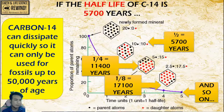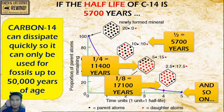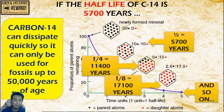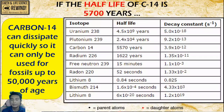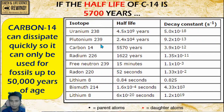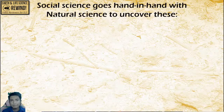Remember that carbon-14 can dissipate quickly — within 50,000 years. So it can only be used for fossils which are very recent. For any organisms older than that, we can use other isotopes like plutonium, radon, and uranium.